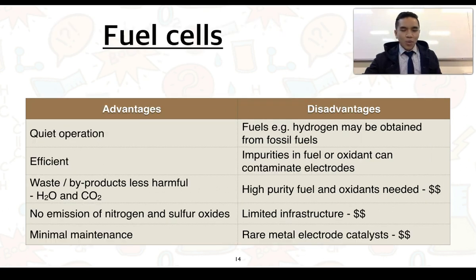What we can also do is look at the overall advantages and disadvantages of fuel cells. So firstly, in terms of advantages, they usually have a quiet operation. They are typically efficient at converting chemical potential energy into electrical energy. The waste or byproducts are less harmful, so they can consist of water, and depending on what type of fuel, it can be carbon dioxide as well. We don't end up with the emission of nitrogen and sulfur oxides, which can contribute to photochemical smog and acid rain, and they require very minimal maintenance.